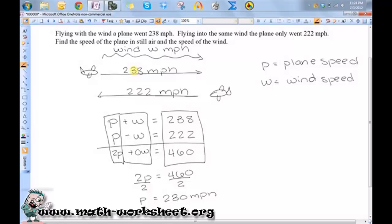So if I want to find the speed of the wind, I just need to find out what number had to be added to that to get 238 or subtracted from this to get 222. So I'm just going to take either one of these equations. Let's do the P plus W equals 238, and plug this P into it to find W. So 230 plus W equals 238. So if I subtract 230 from both sides, we'll see that it's 8.